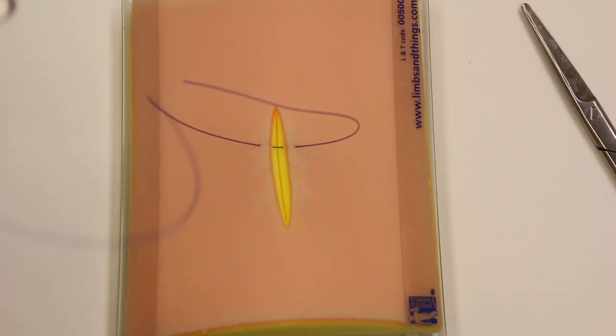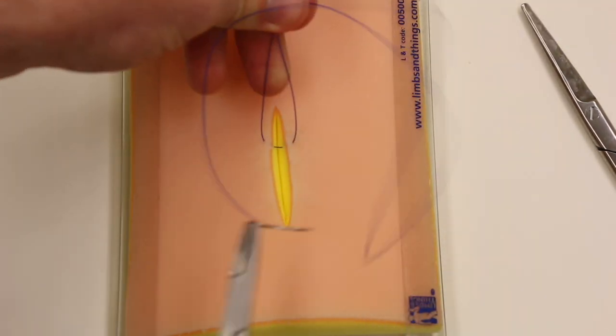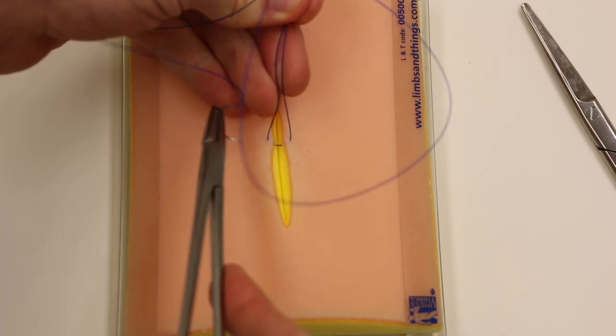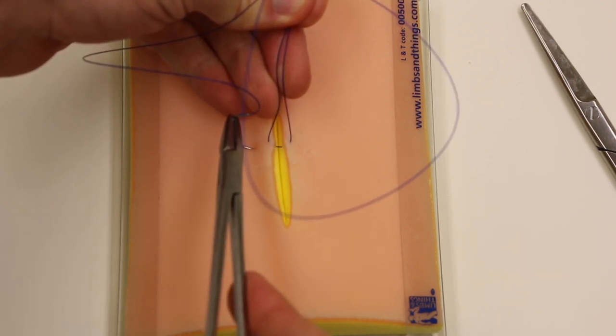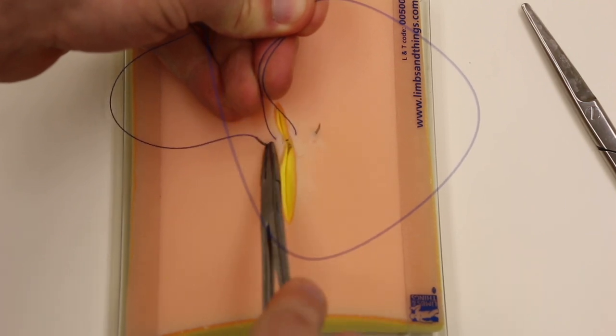And then reload your needle headed the opposite direction that you started. Right here it can be helpful to grab your suture ends, get that out of the way, and then entering just stacked back from that. Going in, crossing, you can see it there, coming out.